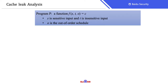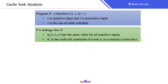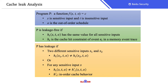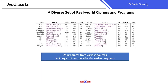The next component is the cache leak analysis. We first model the program P as a function of sensitive input, insensitive input, and the out-of-order schedule. P is leakage-free if the cache behavior of a memory event remains the same for all sensitive inputs. P has leaks if either there are two different sensitive inputs S1 and S2 whose cache behaviors differ, or for any sensitive input S, the cache behavior under out-of-order execution differs from the cache behavior under in-order execution. In the cache leak analysis, we use an SMT solver to reason about the satisfiable sensitive inputs.